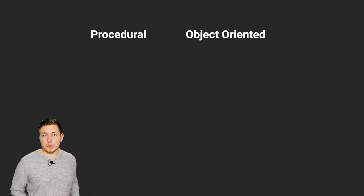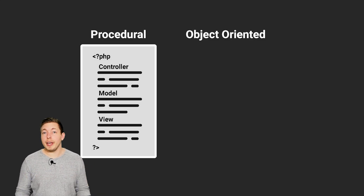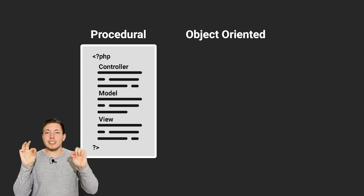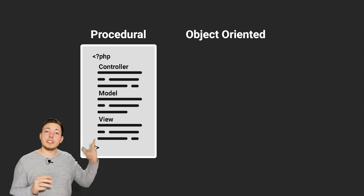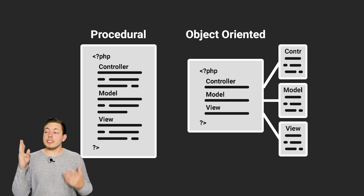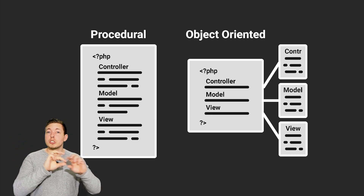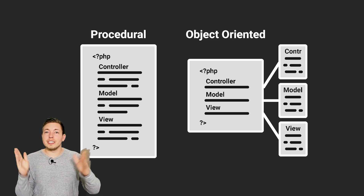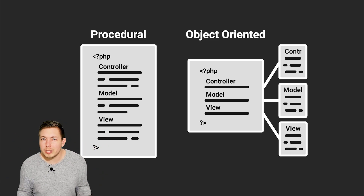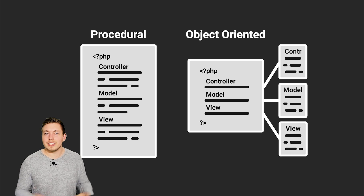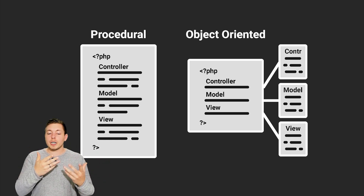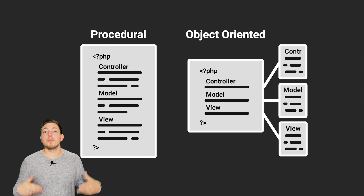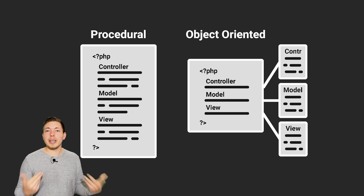Getting back to procedural PHP versus object-oriented PHP: with procedural PHP, when we have a page, we usually do all three things in the same place inside the code. Whereas with object-oriented PHP, we take these three tasks, split them into separate files, and categorize them inside classes. We'll talk about classes later, so don't worry if you don't know what they are yet.